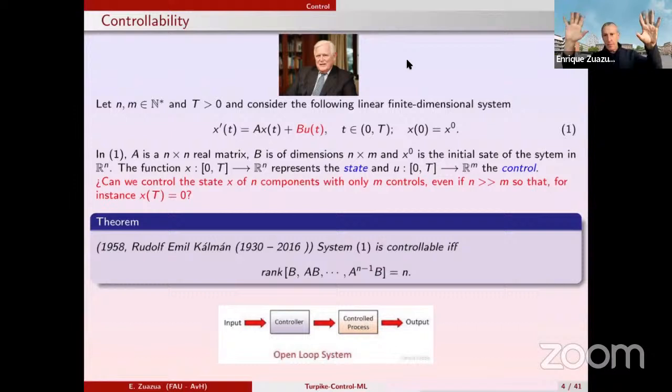So, you can talk about the system A, B. And then what Kalman said is, listen, this system is controllable if and only if the rank of the super matrix B, AB, up to A^(n-1)B is equal to n. So, this is a beautiful result. In the sense that it is just, in principle, a very simple linear algebra characterization that everyone understands.